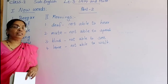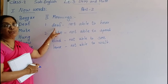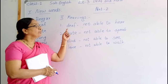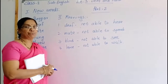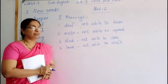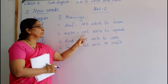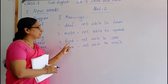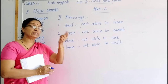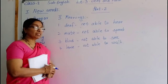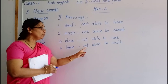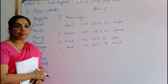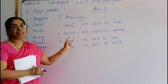Children, deaf means not able to hear — we understood that from the lesson explanation also. Mute means not able to speak. Blind means not able to see — you can't see, that is blind. Lame means not able to walk. These are the two exercises: new words and meanings.